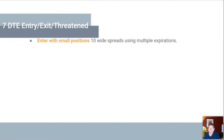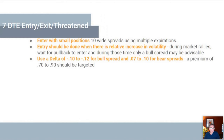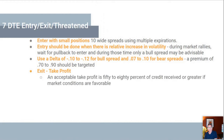Now let's talk about 7 DTE. Seven DTE is similar to zero DTE but has some differences. You want to enter small positions with 10-wide spreads using multiple expirations — instead of putting five contracts on at once, put one or two contracts on Monday, another on Wednesday, and maybe two on Friday, spreading out the risk. I use a Delta of 10 to 12 for bull spreads and 7 to 10 for bear spreads — more distance on the call side because the call side is always closer to the market. Take profit at 50 to 80% of your credit received.